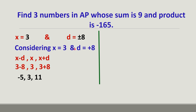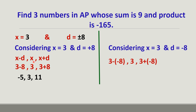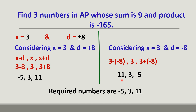By considering x = 3 and d = −8: we get 3 − (−8) = 11, then 3, then 3 + (−8) = −5. The numbers are 11, 3, −5 — the same numbers but in reverse order. Hence, the required three numbers in AP whose sum is 9 and product is −165 are −5, 3, and 11.